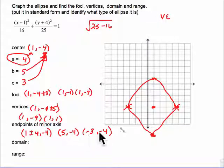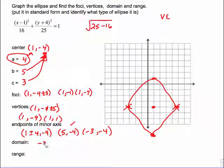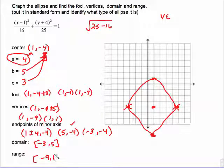If you don't want to use the formula, go with the graph. The endpoints of the minor axis have to be on the shorter axis. Reading from the graph: 5, negative 4 and negative 3, negative 4. Domain is left to right: negative 3 to 5 with brackets. Our range is low to high: the least y value is negative 9, and it goes up to a height of 1.